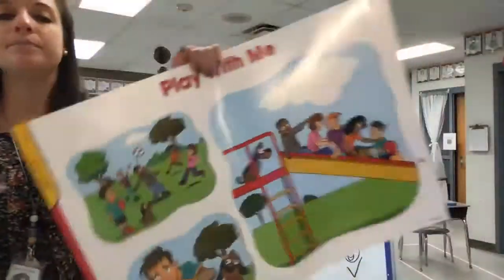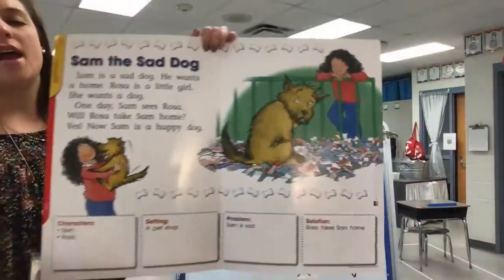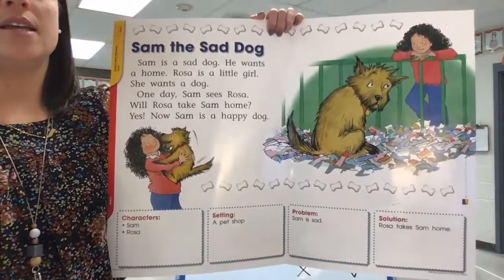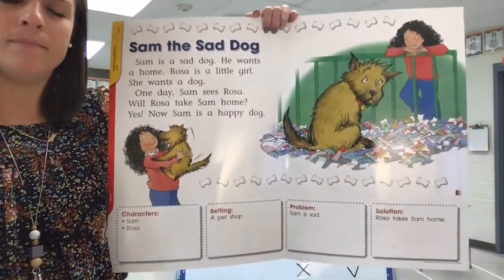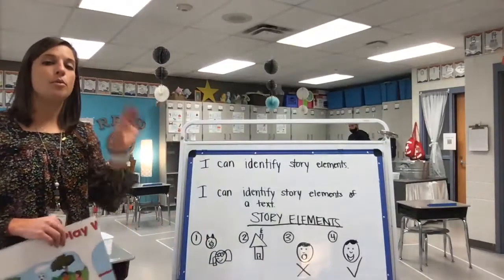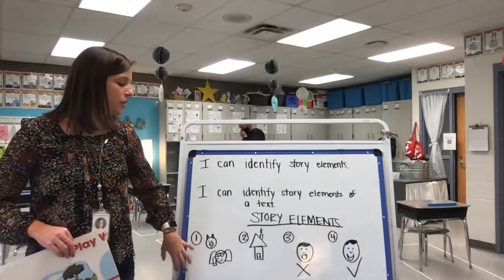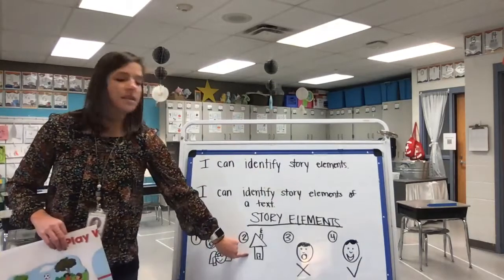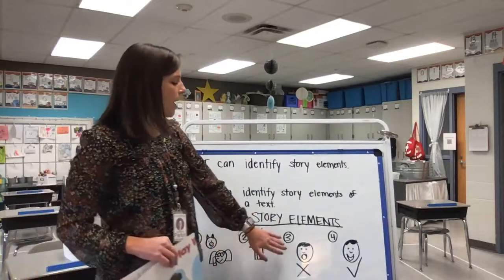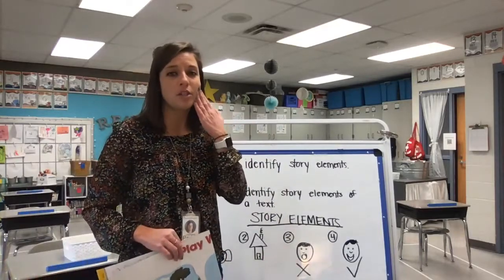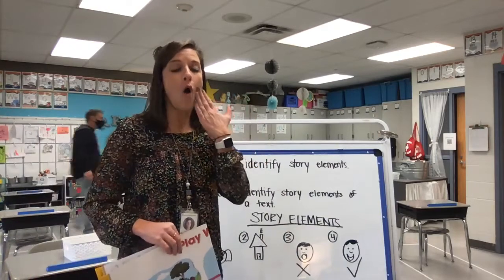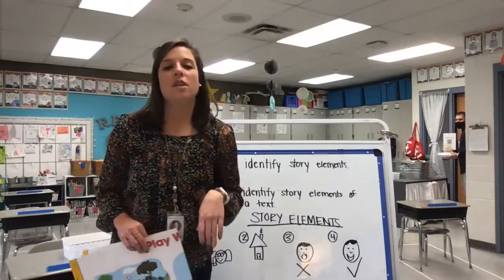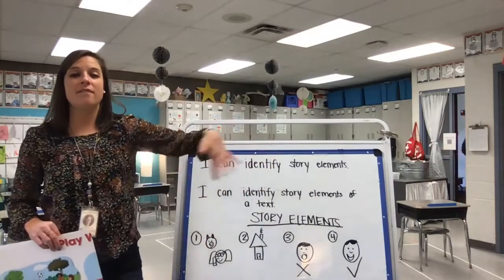So today we're going to look at the other side of our poster — this poster has words on it. We're going to read the words and figure out who our characters are, what the setting is, what the problem is, and how they solved that problem. Those four story elements are what we're going to practice. On the board I have pictures of clues to help us remember what story elements are: I have characters — Piggy and Elephant; I have the setting — an example of a house; I have a problem with an X and a picture of a person looking worried; and the last picture has a check mark and a smile because we solved the problem. These are the four important story elements that make every story interesting.